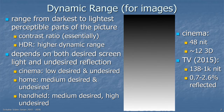The first question is, what is dynamic range when we're talking about imaging? It's the range from the darkest to the lightest perceptible parts of the picture — essentially, contrast ratio. And HDR means higher dynamic range.